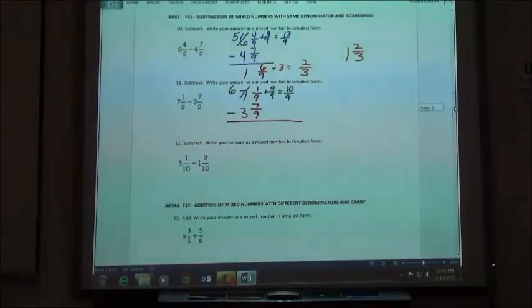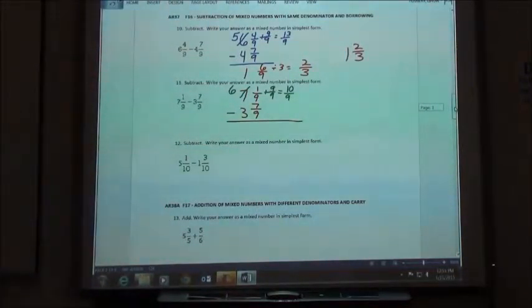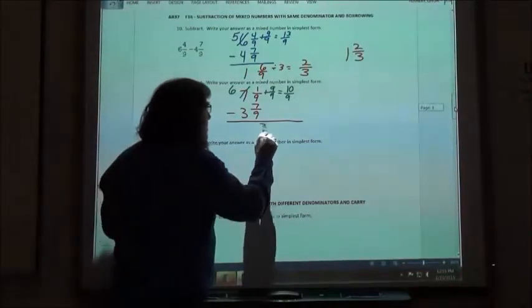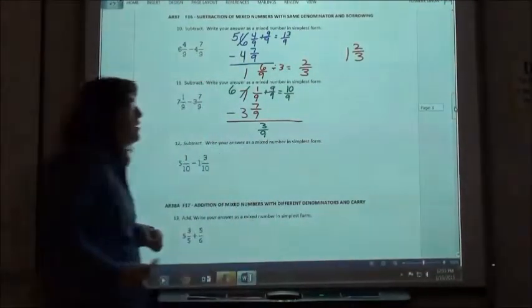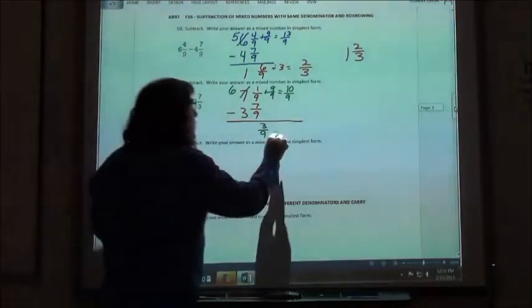And now I can subtract. 10 9ths minus 7 9ths would be 3 9ths, right? And 3 9ths can be reduced. 3 9ths would reduce down to 1 over 3, 1 third.